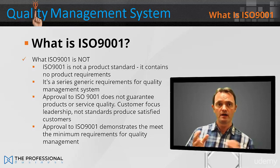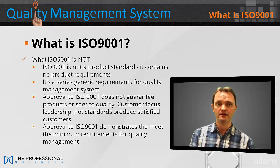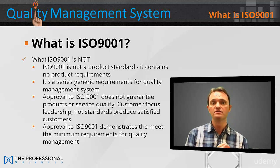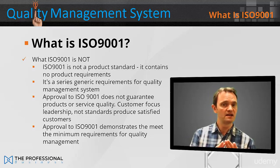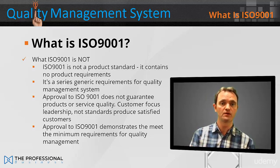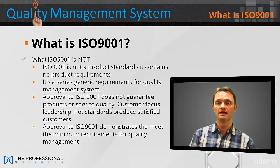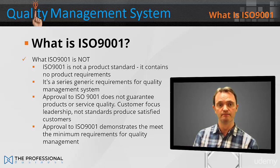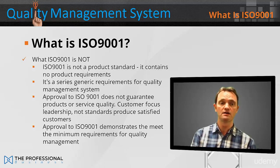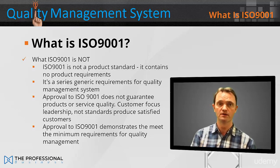Now we've covered what the ISO 9001 is, but what we also need to know is what it isn't. The ISO 9001 is not a product standard — it contains no product requirements. It's a series of generic requirements for quality management systems. Approval to the ISO 9001 does not guarantee product or service quality; customer-focused leadership, not standards, produces satisfied customers. Approval to the ISO 9001 demonstrates that a company meets the minimum requirements for quality management.